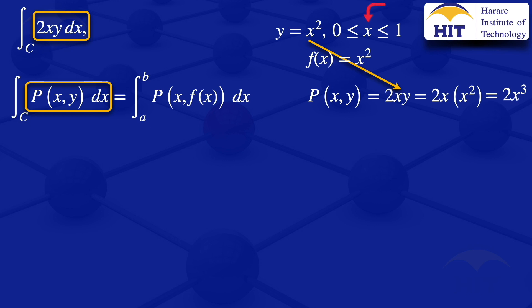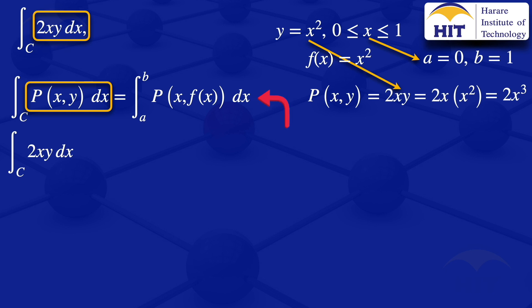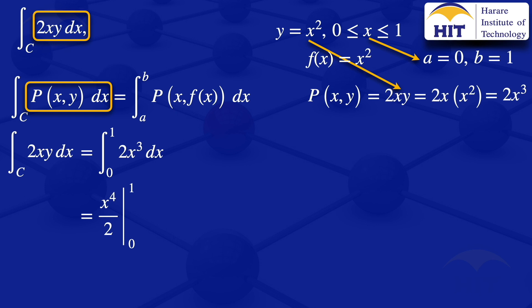From our limits, x varies from 0 to 1, so a equals 0 and b equals 1. Using the formula, the integral of 2xy with respect to x along C equals the integral from 0 to 1 of 2x cubed with respect to x. Integrating gives x to the power 4 over 2; putting in the limits 0 to 1 gives the result one half.